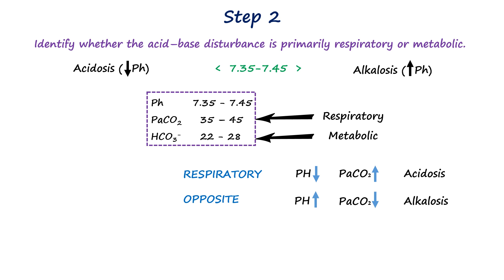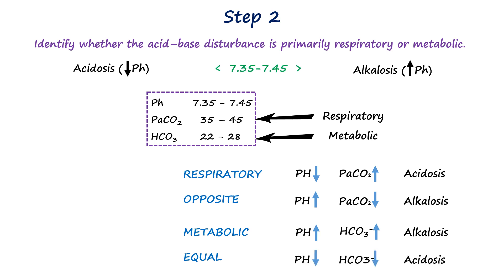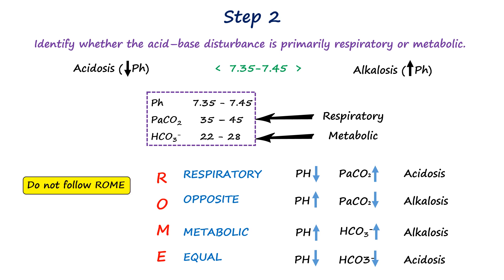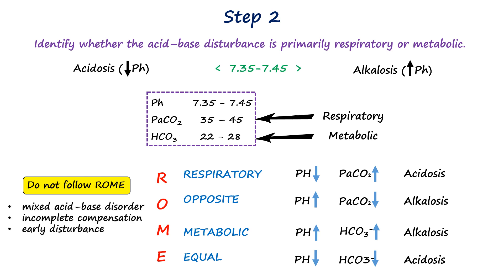If there's no clear opposite relationship between carbon dioxide and pH, we check whether bicarbonate is changing in the same direction as pH. If bicarbonate moves in the same direction as pH, it suggests a primary metabolic disturbance, because bicarbonate is a base and directly affects pH — when bicarbonate falls, pH falls, and when bicarbonate rises, pH rises. We can use the mnemonic ROME to remember this relationship. However, if pH, CO2, and bicarbonate do not follow the ROME pattern, it suggests a mixed acid-base disorder, incomplete compensation, or an early disturbance.